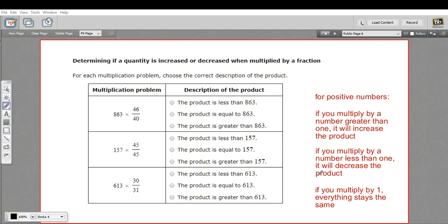But if you multiply by a fraction that's less than one, like one half, multiplying by one half is the same as dividing by two. It makes things smaller. And of course, if you multiply by one, everything stays the same.